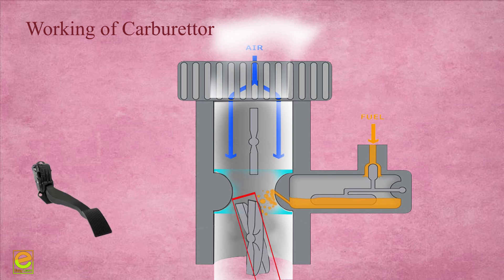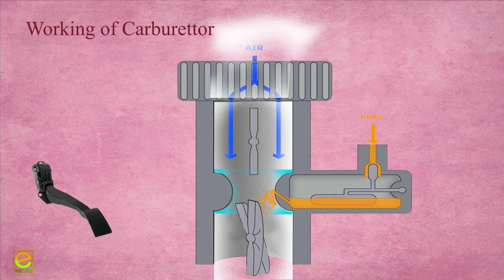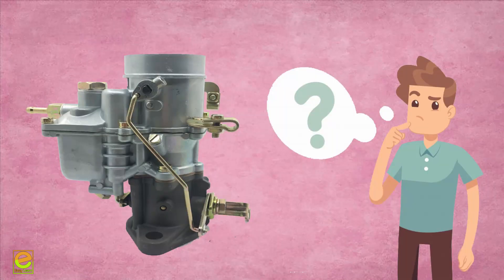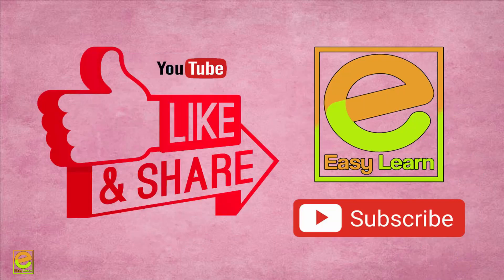The throttle valve is connected to the accelerator pedal. The air horn directs air flow speed. The air flow speed generates wind pressure. The fuel jet is on the air jet and the engine operates on air flow speed.